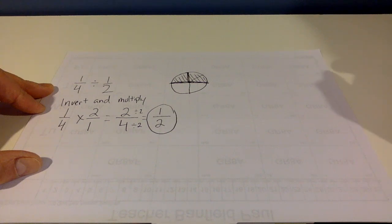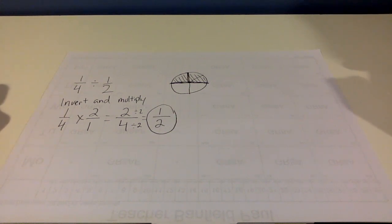So 1 quarter divided by 1 half is 1 half.